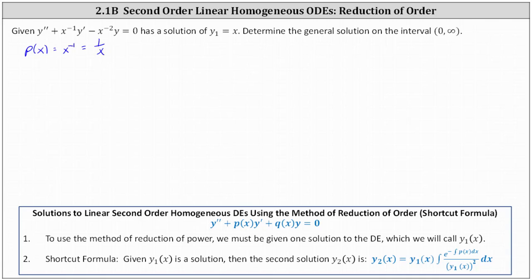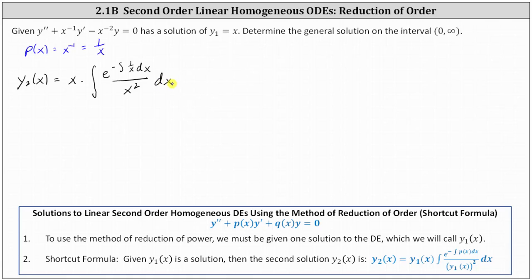Therefore, the second solution y2 of x is equal to y1 of x, which is x, times the integral of e to the power of the opposite of the integral of one divided by x, all divided by y1 of x squared, which is x squared.